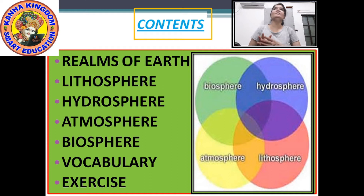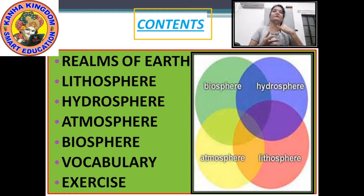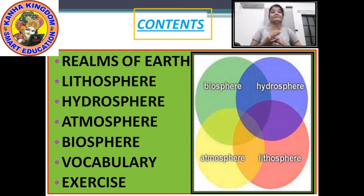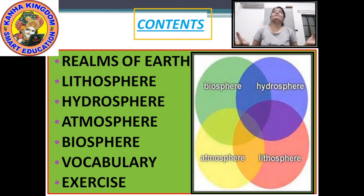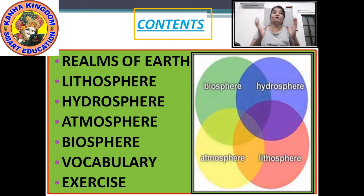While explaining the lithosphere, I told you it means the realm of land, and it consists of 3 layers: core, mantle, and crust. Crust is the uppermost layer, mantle is the middle layer, and core is the innermost layer. The core is again divided into 2 parts: the outer core and the inner core. As you go deeper into the Earth, it becomes hotter.